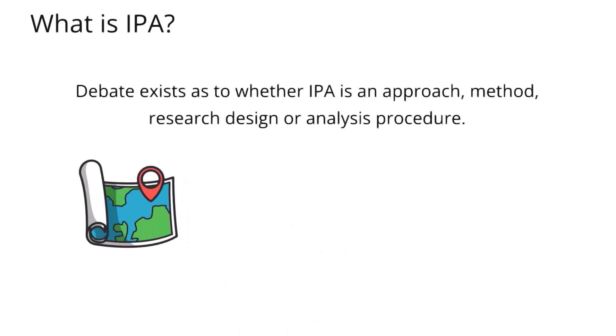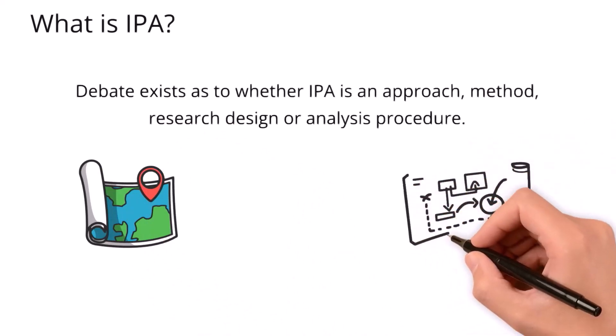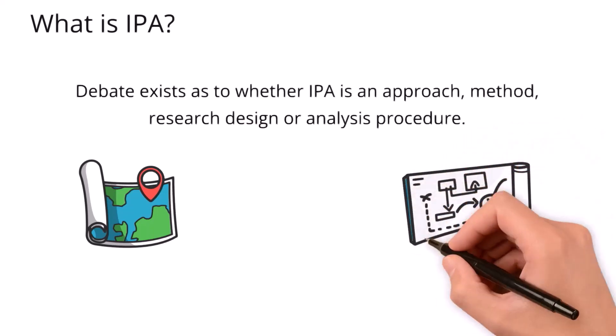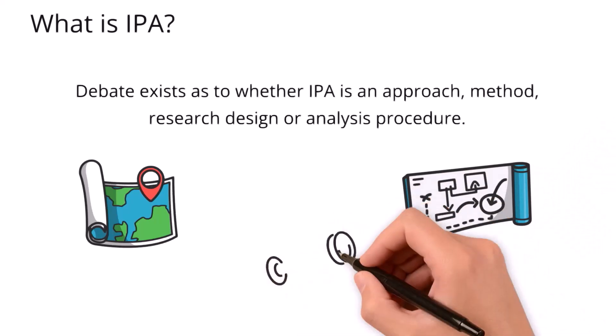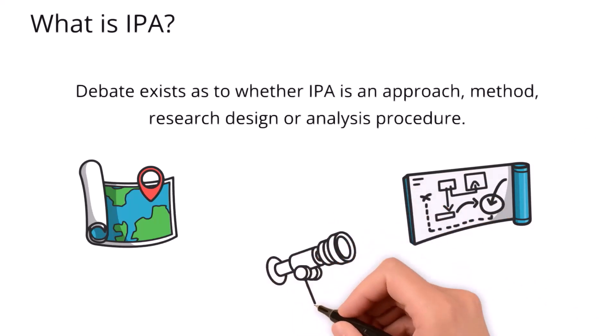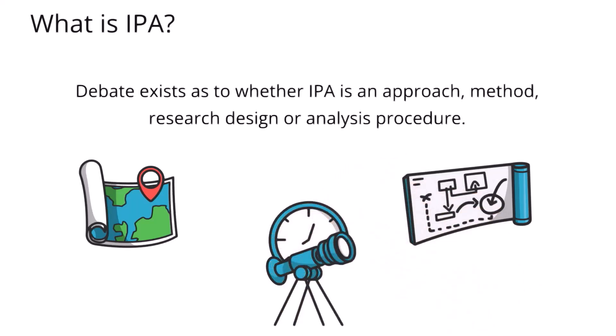As you can see, IPA has 'analysis' in the name, so it prescribes a particular approach to analyzing data which is focused on interpretation. And within Smith et al.'s definition that we just looked at, they call IPA a method. IPA also has 'Phenomenology' in the name, so as could be assumed it relates and aligns neatly with the research philosophy of Phenomenology.